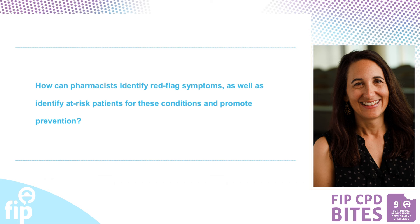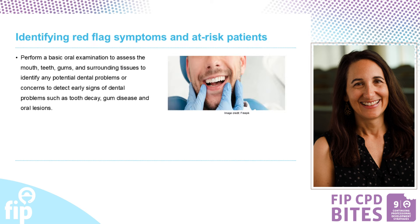How can pharmacists identify red flag symptoms as well as identify at-risk patients for these conditions to promote prevention? Performing a basic oral examination to assess the mouth, teeth, gums, and surrounding tissues can be very helpful. When patients present to the pharmacy, this can be done whether they have symptoms or not. A basic oral health examination can help identify early signs of decay, dental caries, gingivitis, gum diseases, periodontal diseases, or any other oral conditions or oral lesions.